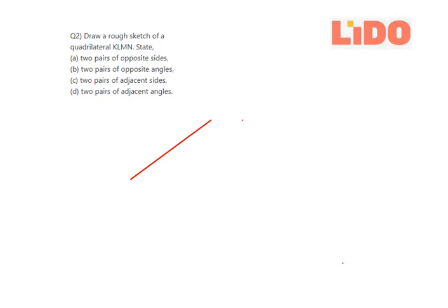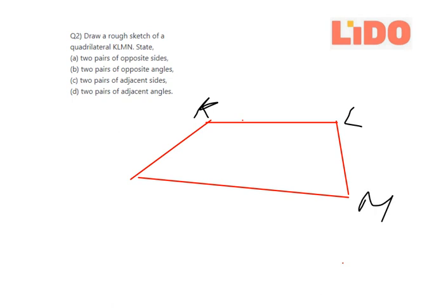Second, one, two, three and then four. Okay, so this is your quadrilateral. Now the four sides of this are KLMN.